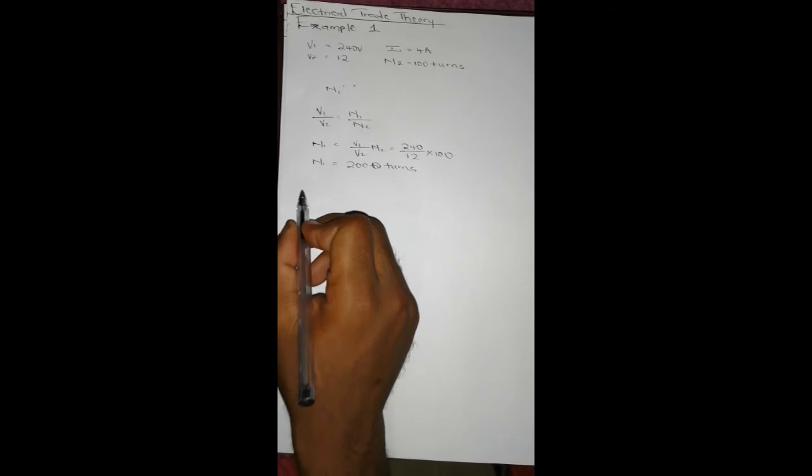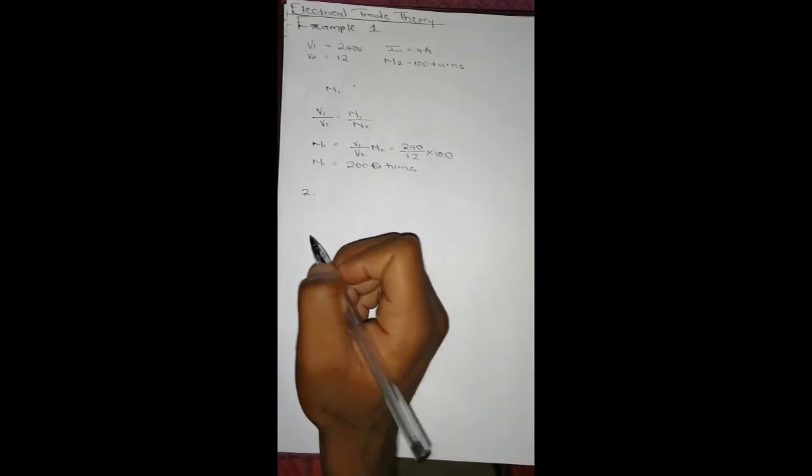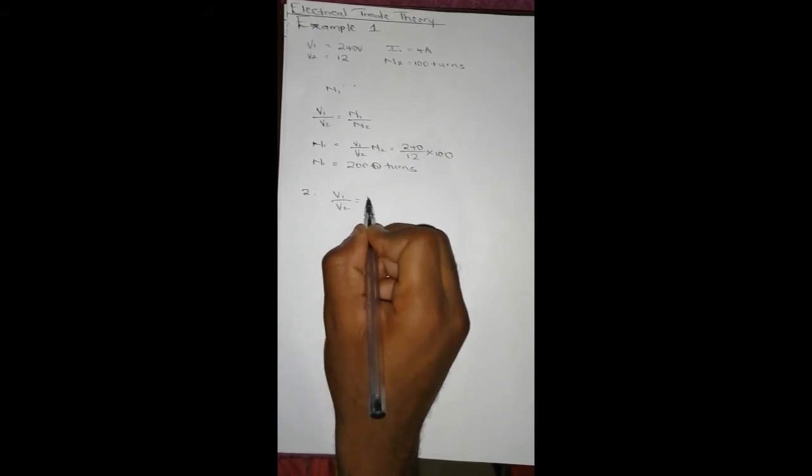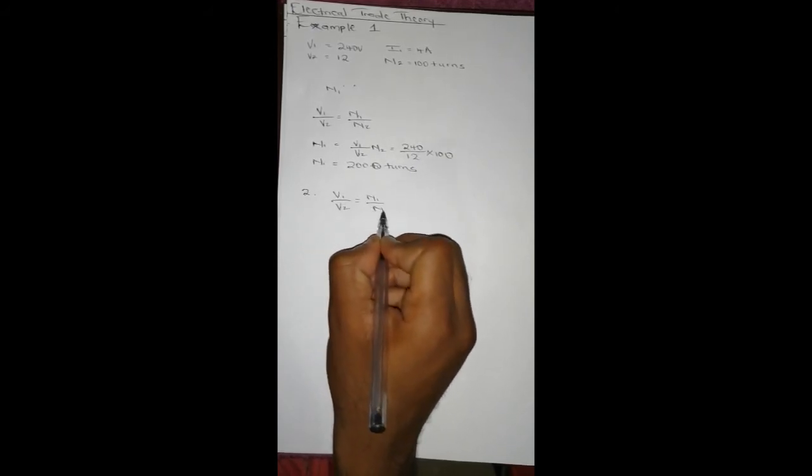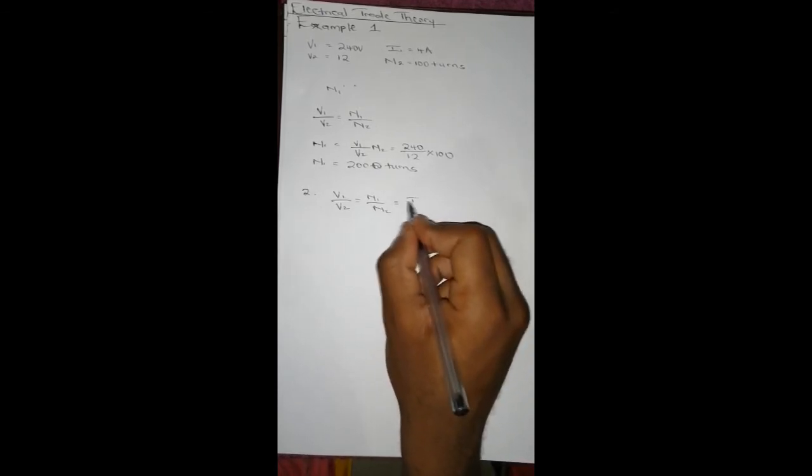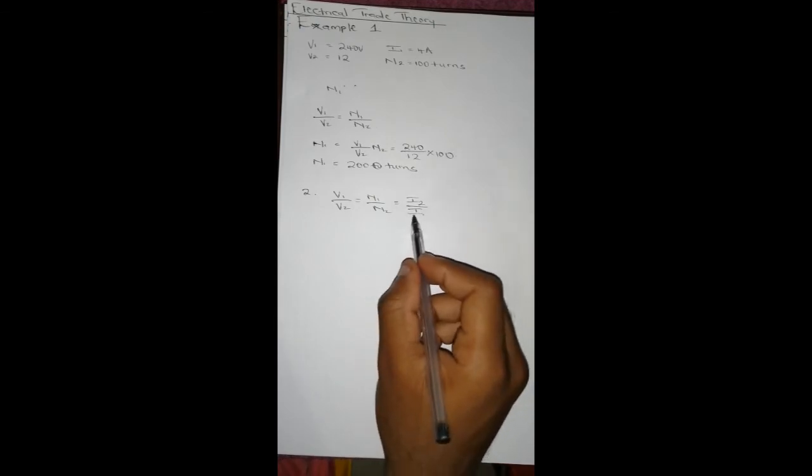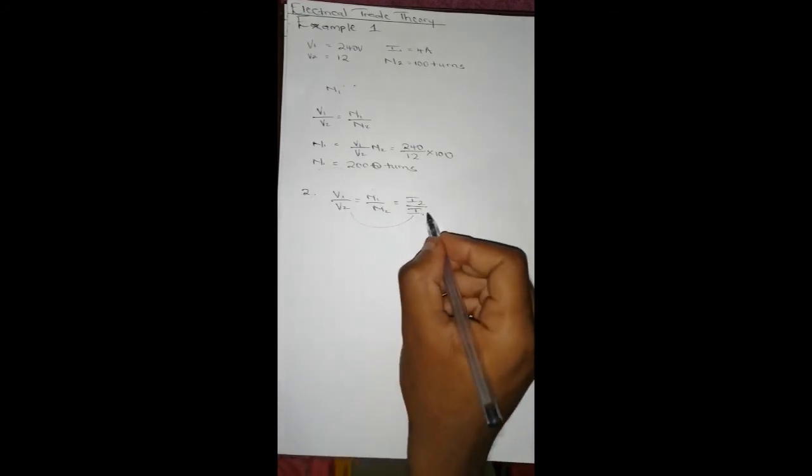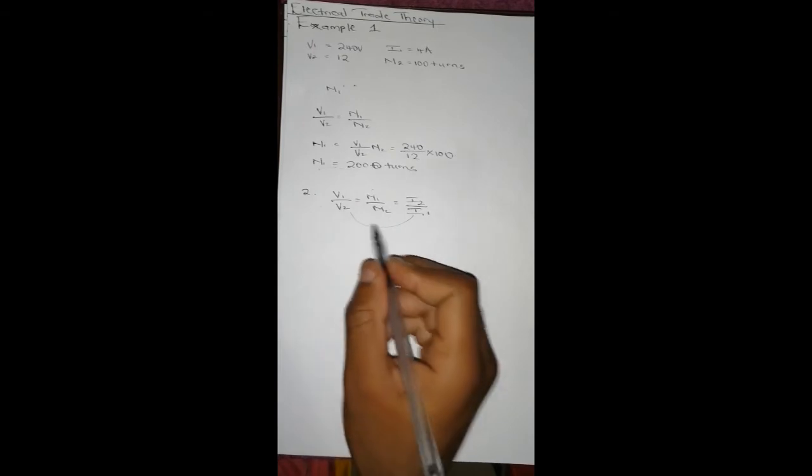And then question 2 says calculate the secondary current. So you can make use of the formula V1/V2 = N1/N2 = I2/I1. So in this way, you can use this tool and avoid using the number of turns, just in case you got N1 wrong, so this doesn't become wrong.